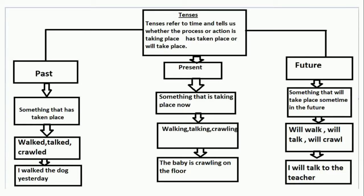Students, I think you have understood that the tense of a verb shows the time when an action takes place. There are three tenses: past tense, present tense, and future tense. Tense refers to time and tells us whether the process or action is taking place, has taken place, or will be taking place.